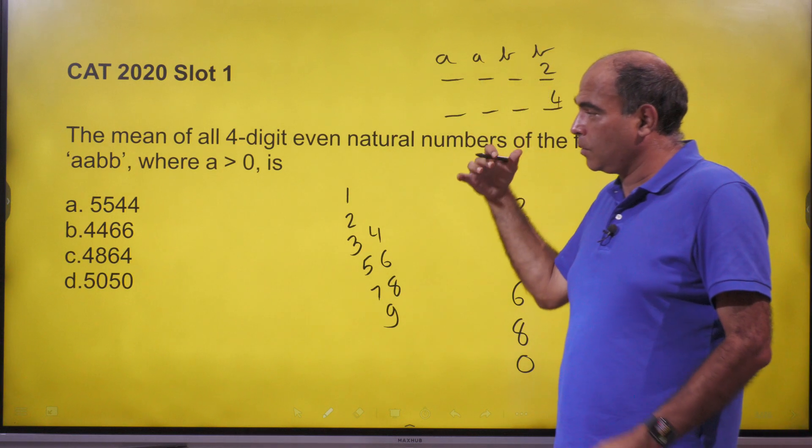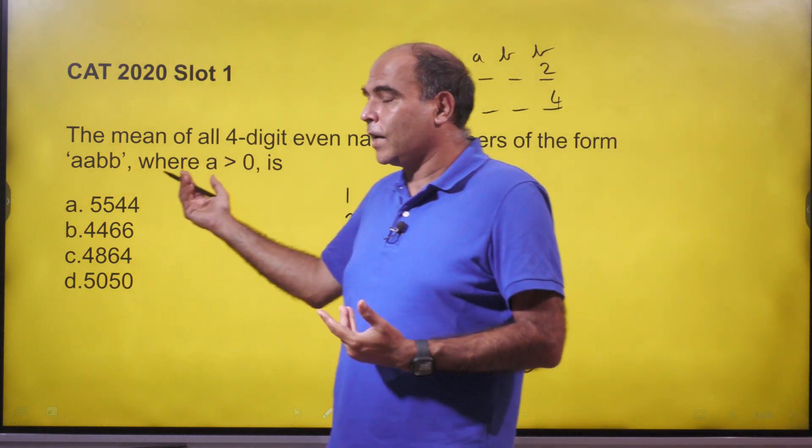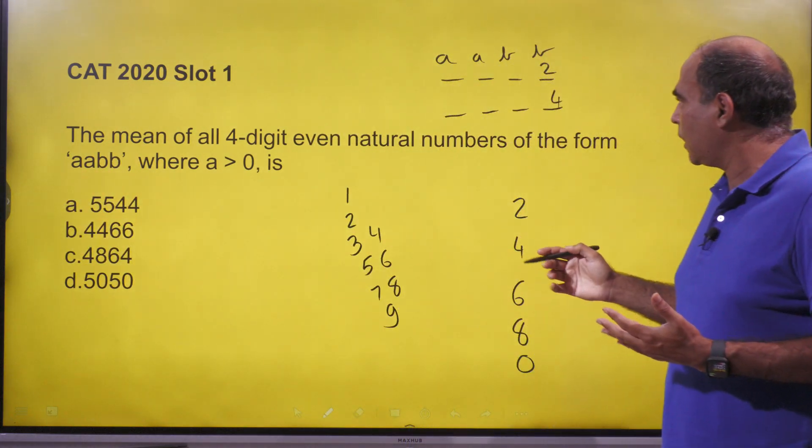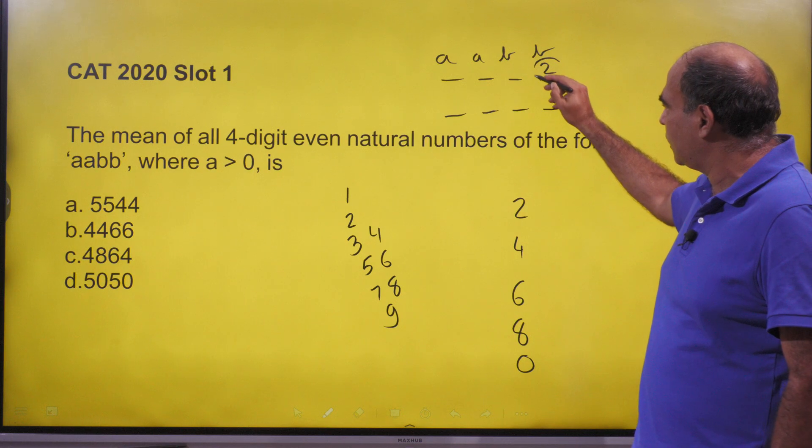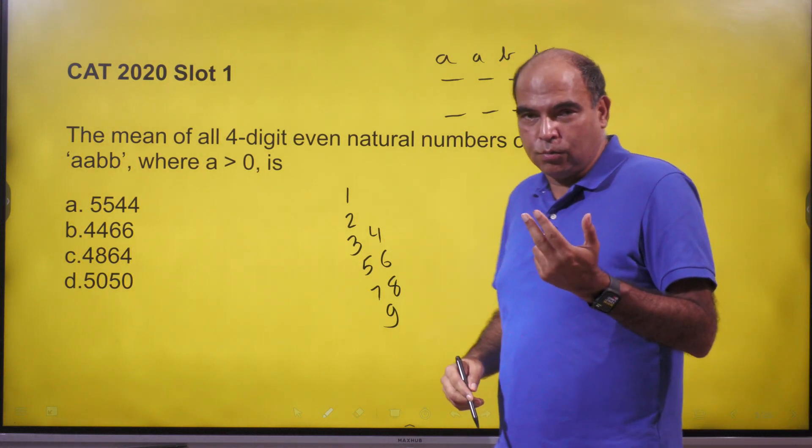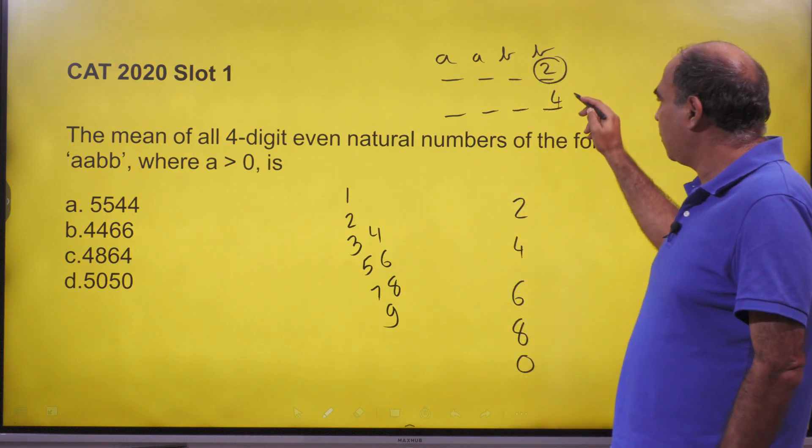So what is the mean of all these numbers? a ≠ 0 means it's strictly four digits. The first thought is that if I try to make numbers, since it's an even natural number, if I try to make numbers ending with 2 or numbers ending with 4, 6, 8, or 0, they'll be symmetrical in nature.